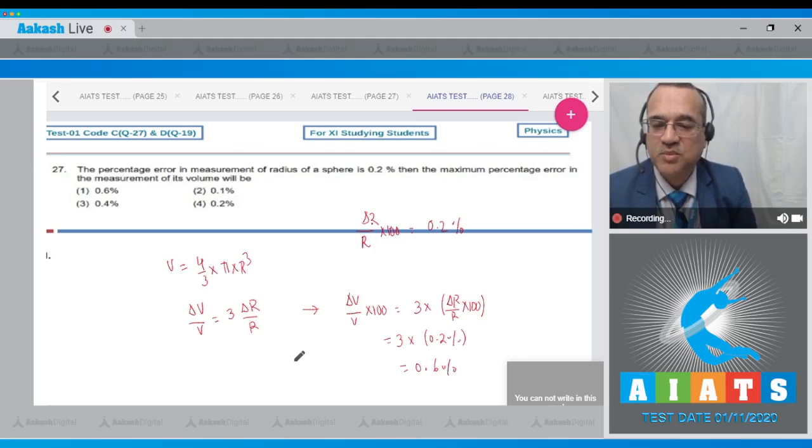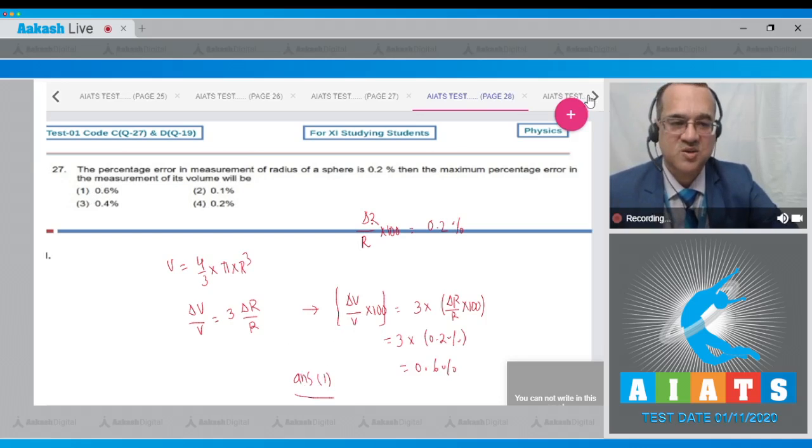So error in the volume measurement will be equal to 0.6 percent, and that is your option number 1. So answer to this question is first option. Let us move to the next problem.